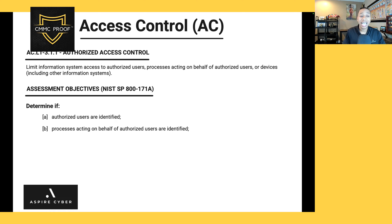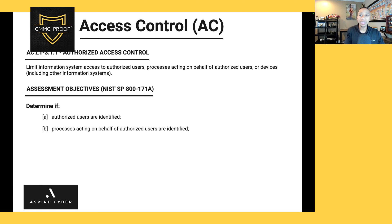We also need to ensure that processes acting on behalf of authorized users are identified — think about your service accounts and automated processes like data backup, antivirus, and network vulnerability scans. All of those processes need to be authorized by and associated with a unique user. We can pull up the list of authorized processes and service accounts within Microsoft 365 and validate that all services are associated with a user.